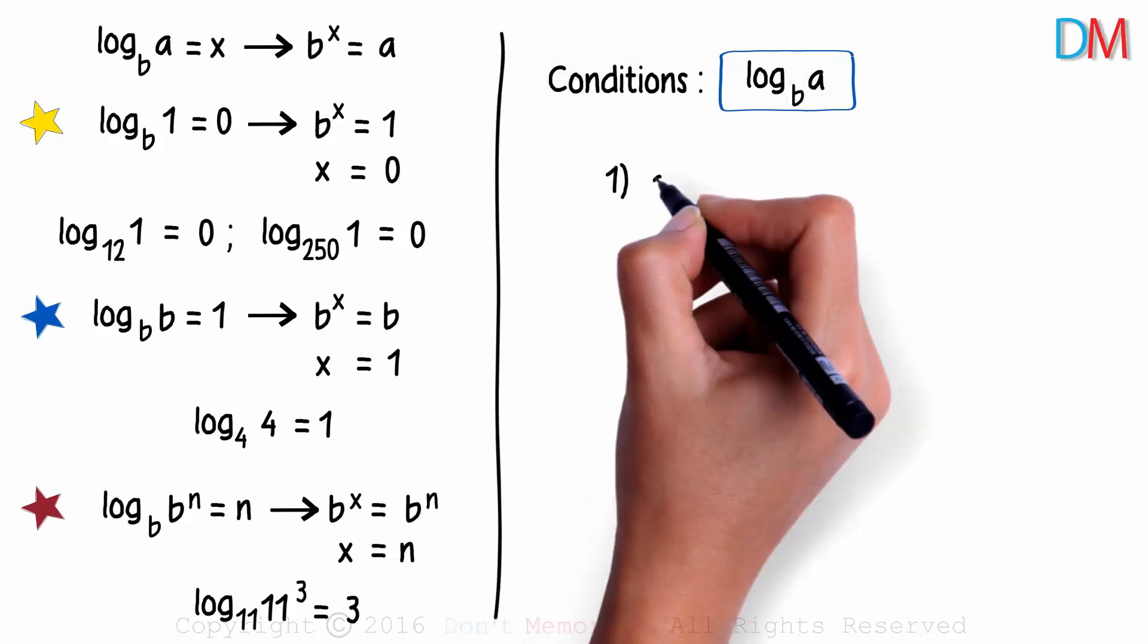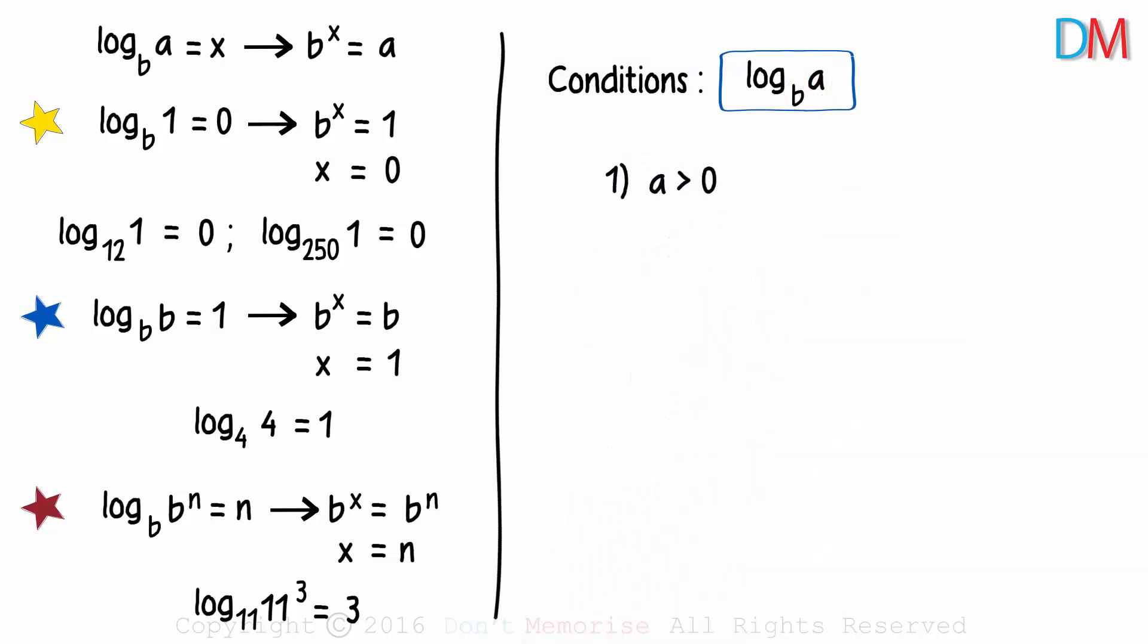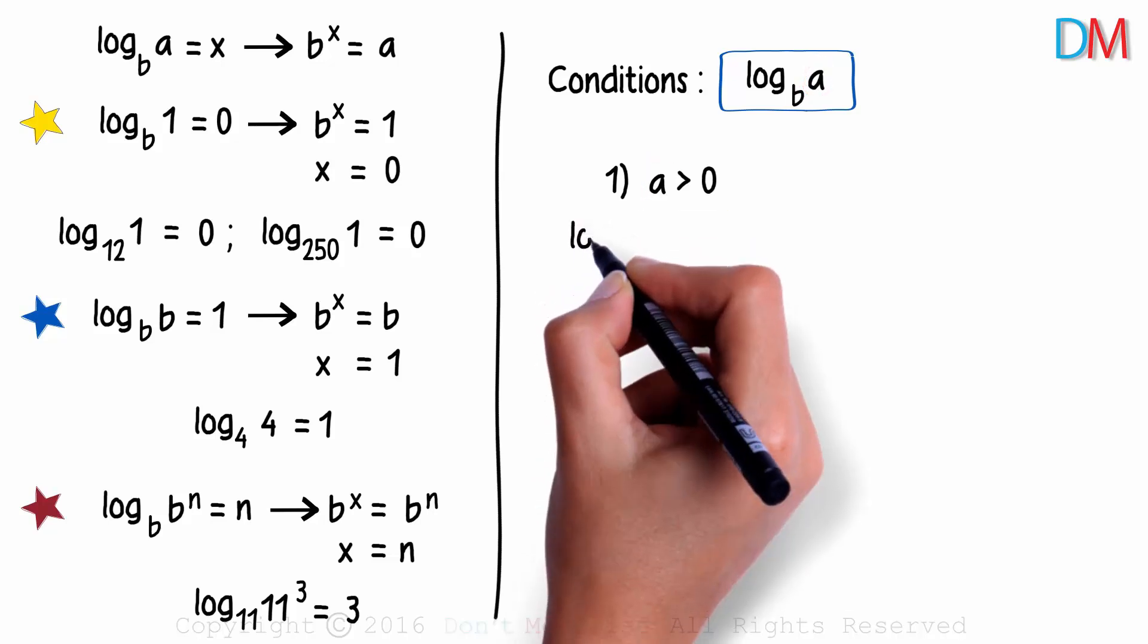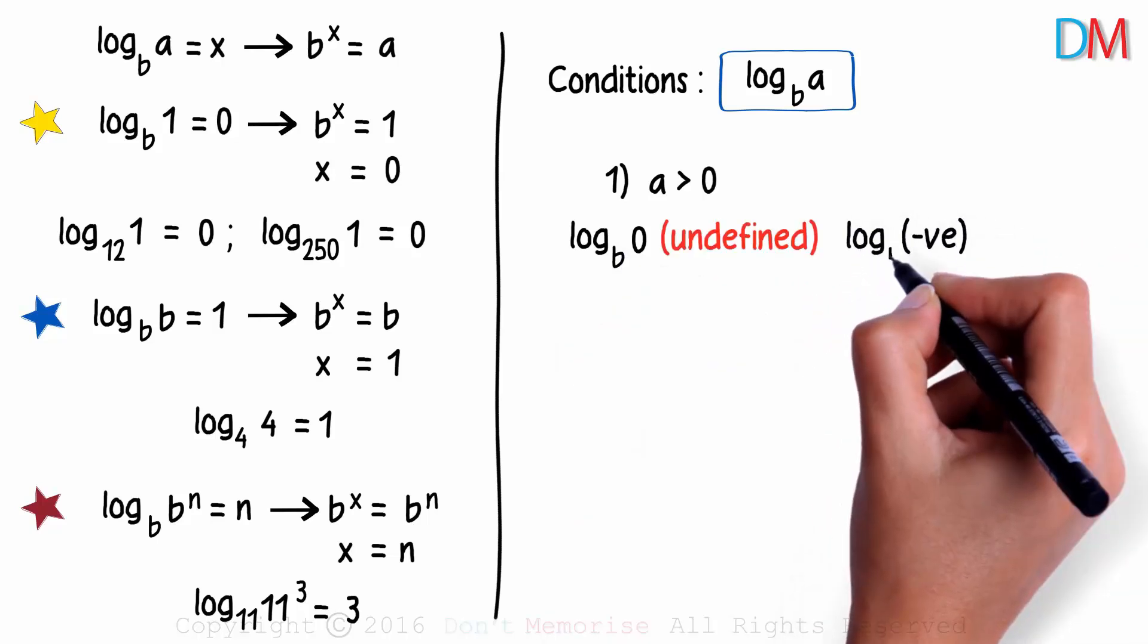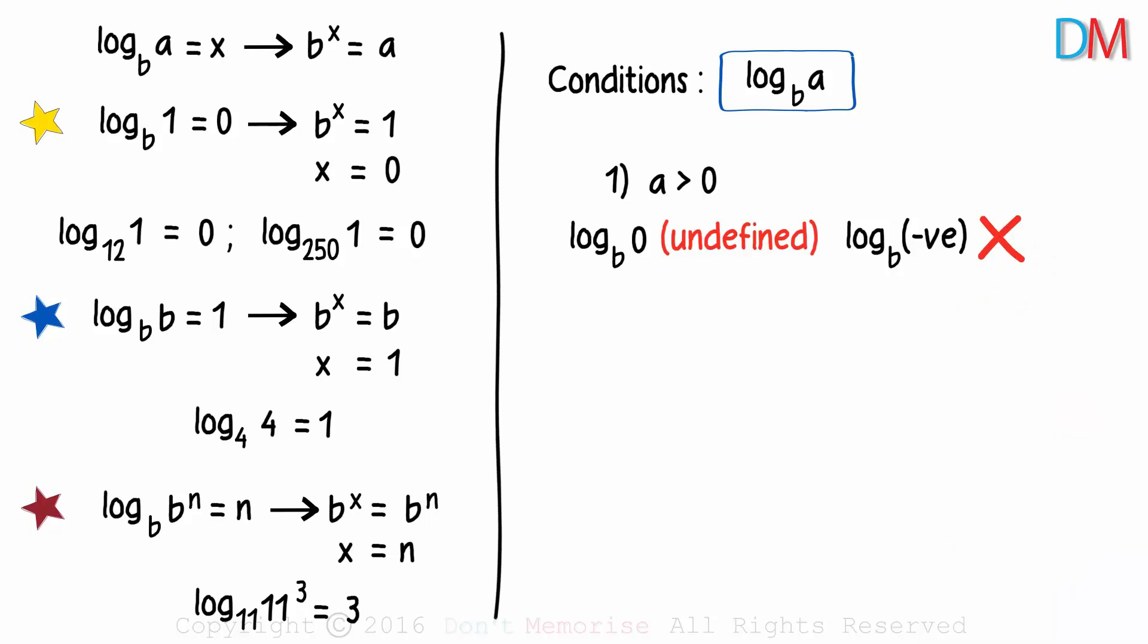Okay first, the argument has to be greater than zero. This value here has to be greater than zero. So log of zero to the base b is undefined, and the log of a negative number to the base b is also incorrect. But don't get confused here. The answer of the log can be zero or negative.